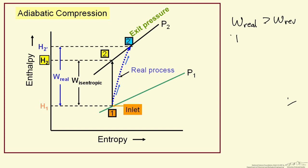We have to put in more work to get to the same pressure, and therefore end up at a higher temperature for adiabatic compression that is irreversible. So temperature two irreversible is greater than temperature two reversible. Now we want to look at the same type of behavior, but for expansion instead of compression — namely starting at high pressure and going to low pressure.